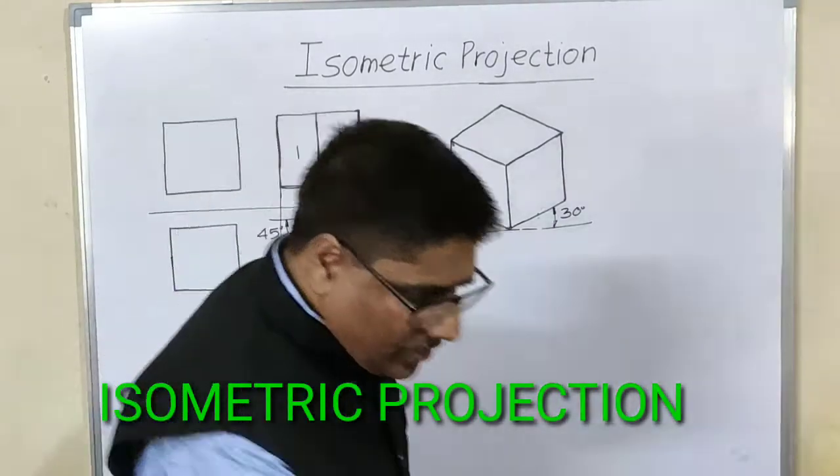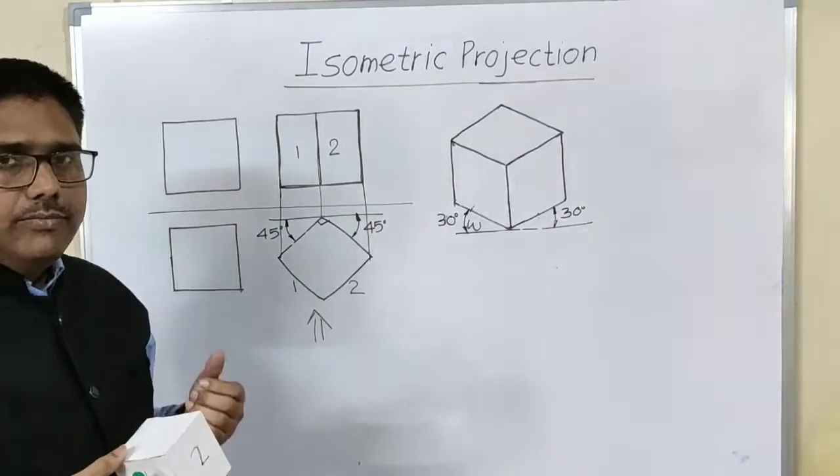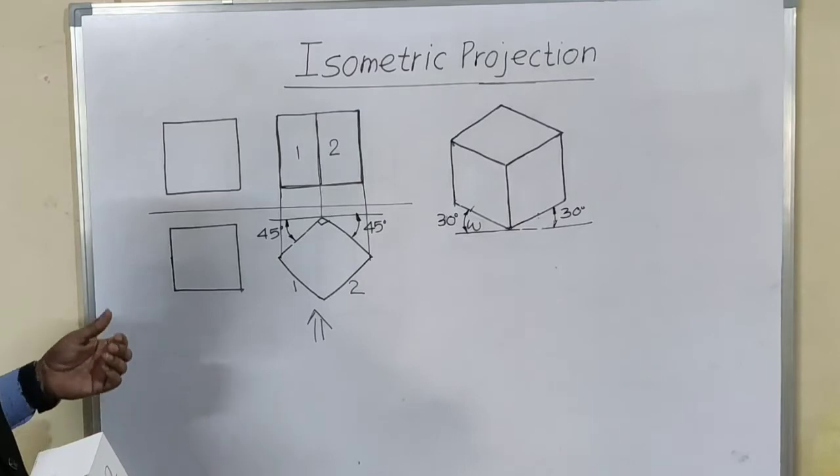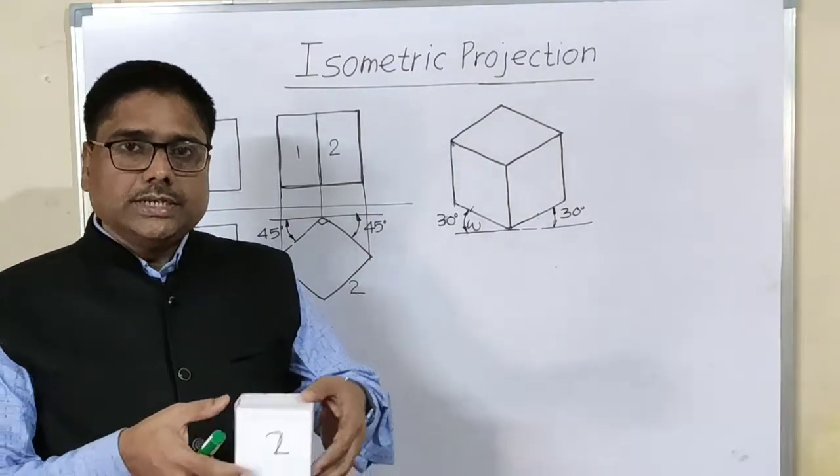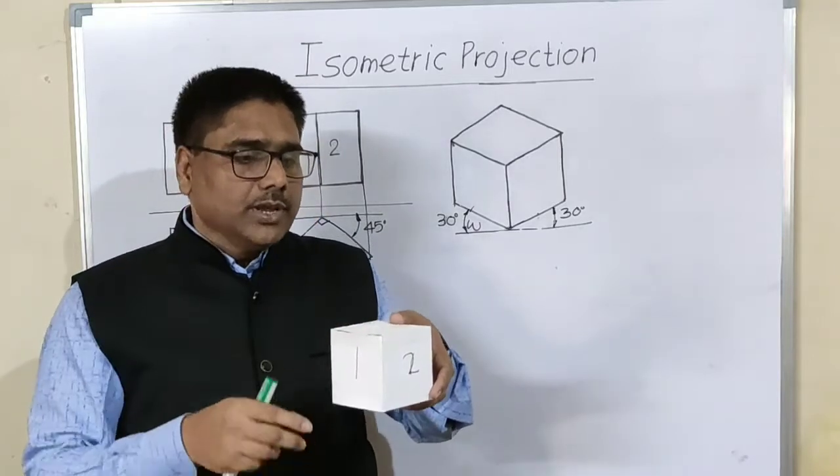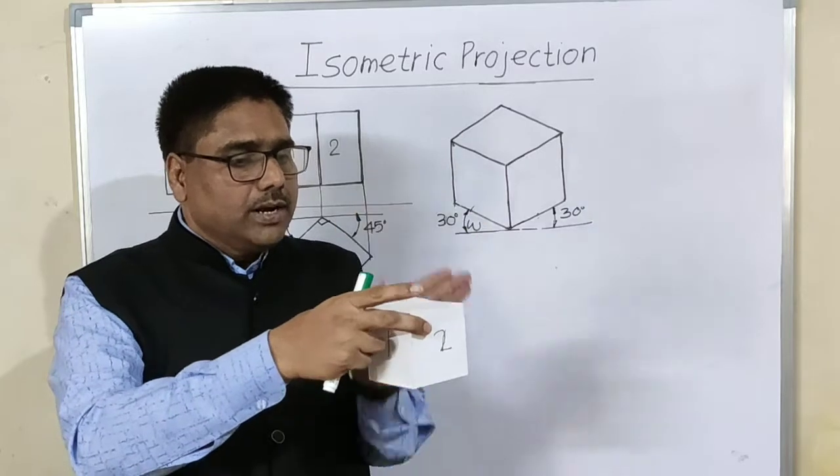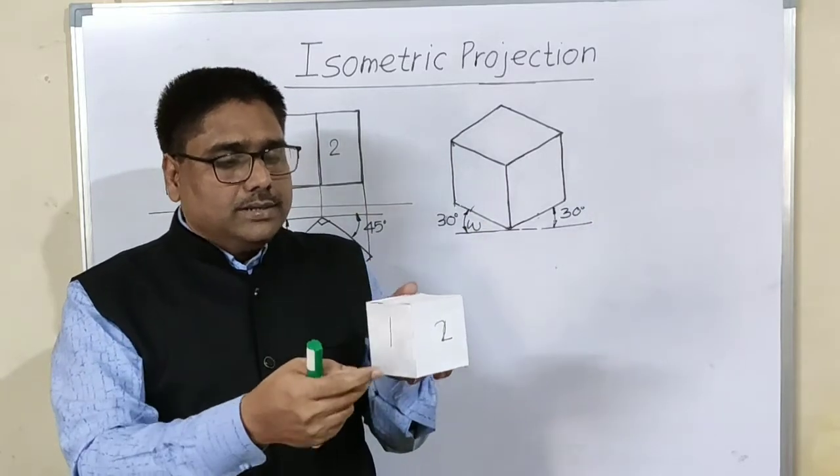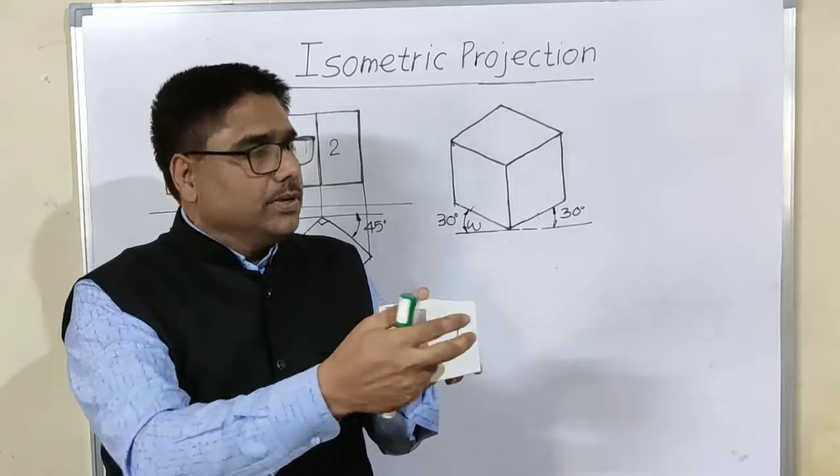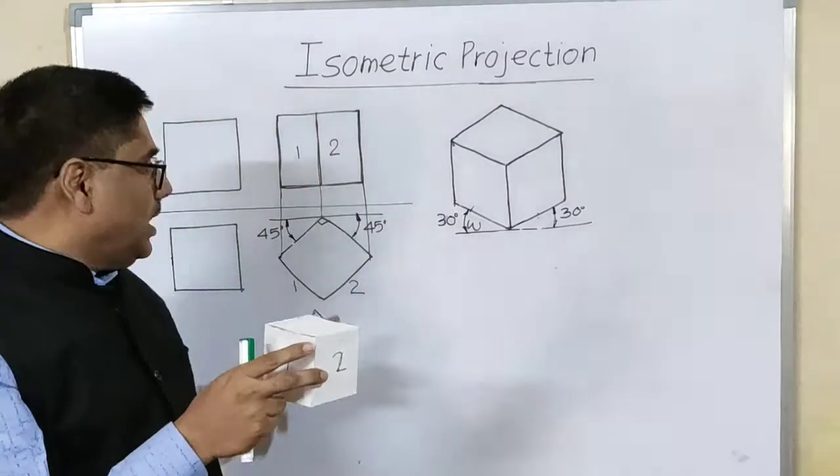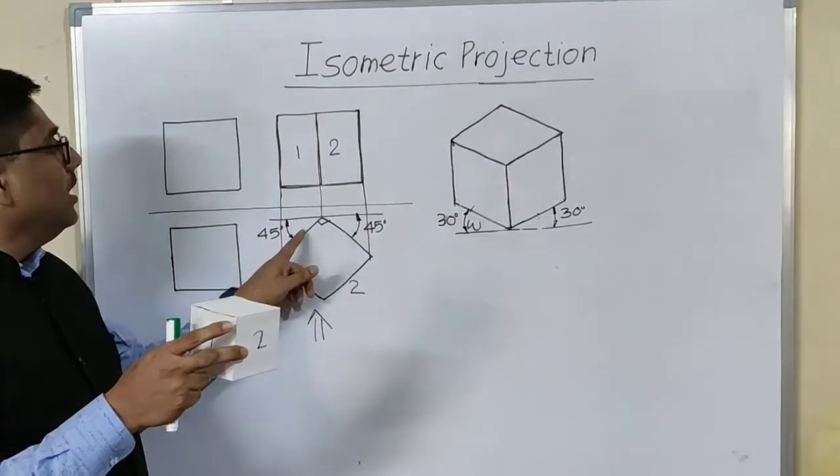As we know, to make all the dimensions visible in a single view, we go for two modifications. The first modification is rotate this object through 45 degrees such that all the edges of top face are equally inclined to VP, and in this position if you draw its front view, you will get two faces and top view will be square but with some different orientation and all these edges will make 45 degree angle with VP.